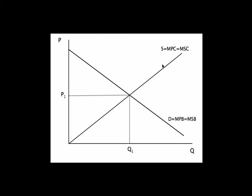All we mean by social in this context — social cost or social benefit — is just all the costs and benefits that we might possibly be concerned about, from society's point of view, anyone who might possibly be affected by this market. In our ordinary case, there was no difference between private cost and social cost, because social includes everyone. The producers were bearing this cost, so it was the marginal private cost, and that was the same as the marginal social cost, because there were only private costs to worry about.